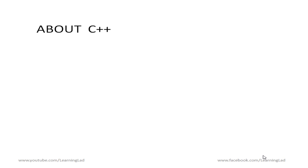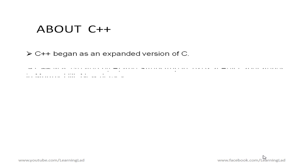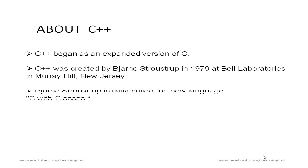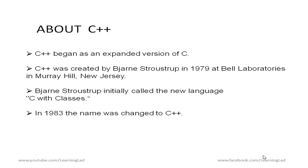So first we are going to see some things about C++. C++ began as an expanded version of C. It was created by a man called Bjarne Stroustrup in 1979 at Bell Laboratories. He initially called his new language C with classes, but in 1983 the name was changed to C++ because people started to realize that C++ offers much more than C with classes.